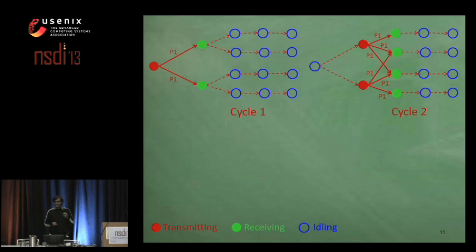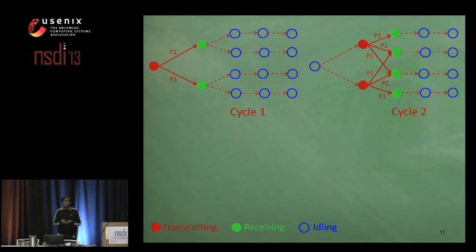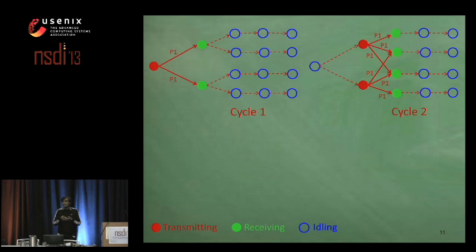In the second cycle, instead of contending with each other, these first-hop nodes forward the received packet at the same time so that they interfere constructively at the next hop, allowing its nodes to correctly decode the packet despite overlapping transmissions.